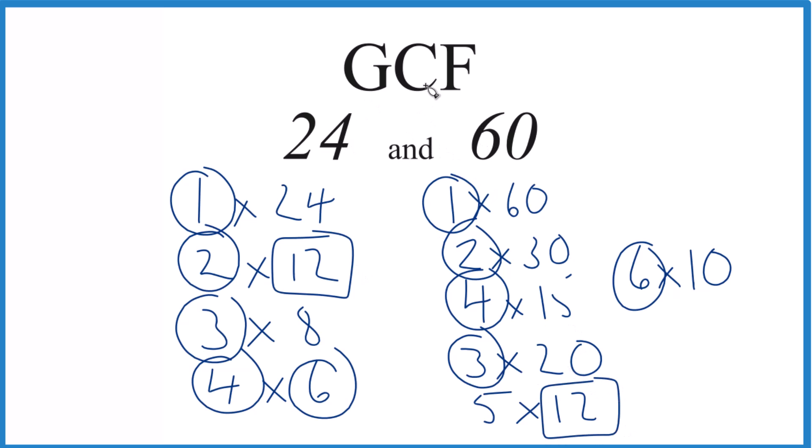So the GCF for 24 and 60, that's just going to be 12. That's it. That's how you find the greatest common factor for 24 and 60 - the answer is 12. You could also use something like prime factorization to do this. You get the same answer, but unless you have really big numbers, this is a pretty reliable method.